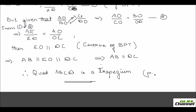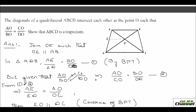Since two opposite sides of the quadrilateral are parallel and the other two are not, quadrilateral ABCD is a trapezium. Hence proved. I hope you understood how the BPT theorem is used to prove or solve problems. See you in the next video. Bye.